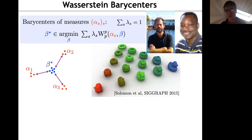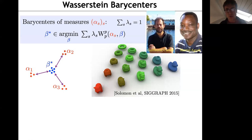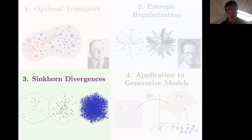The same Sinkhorn trick extends to other problems — for instance Wasserstein barycenters, introduced by Carlier and Agueh, where you minimize a weighted sum of Wasserstein distances. The algorithm can be applied to compute barycenters and many other variational problems involving optimal transport.